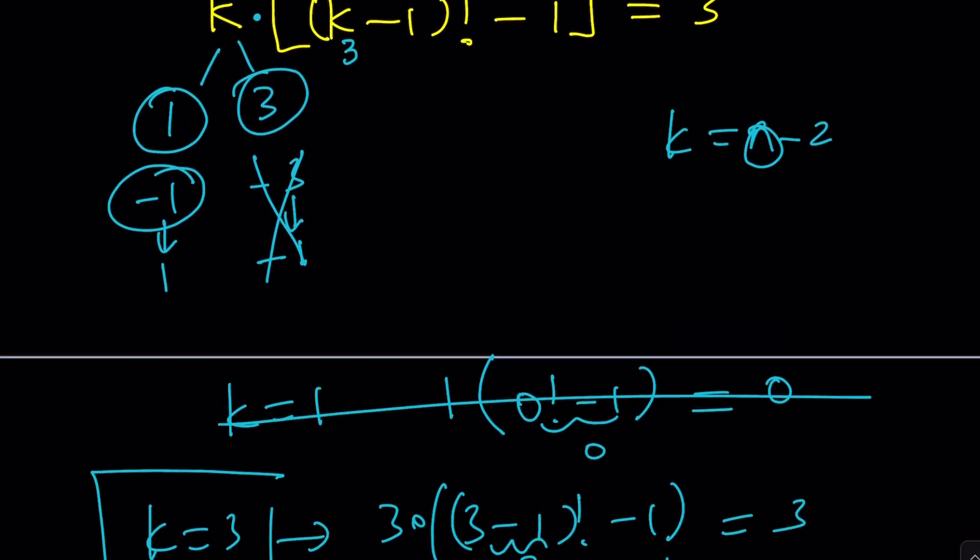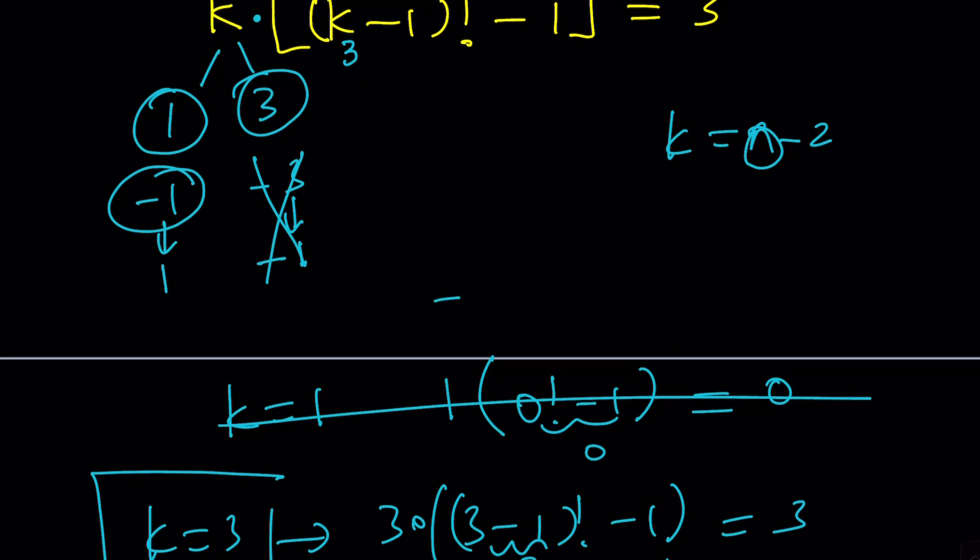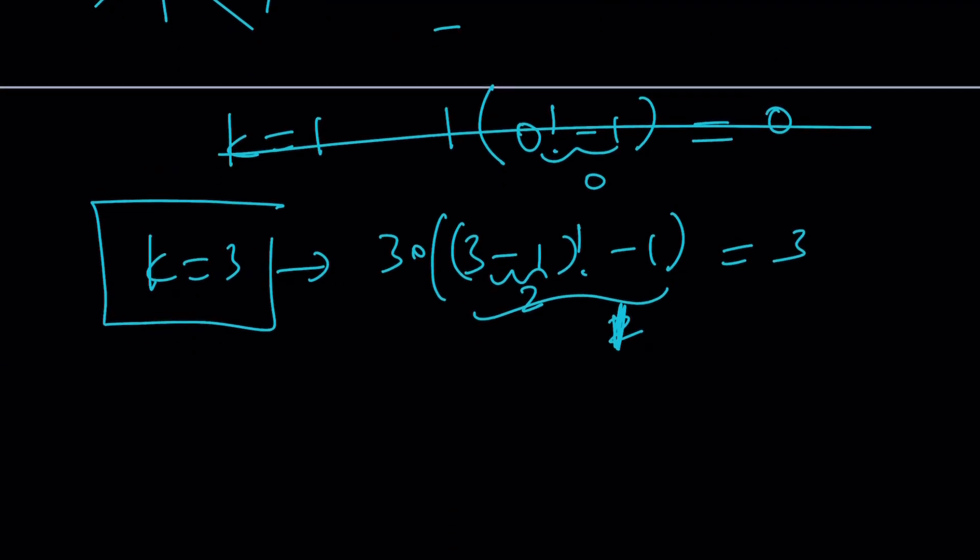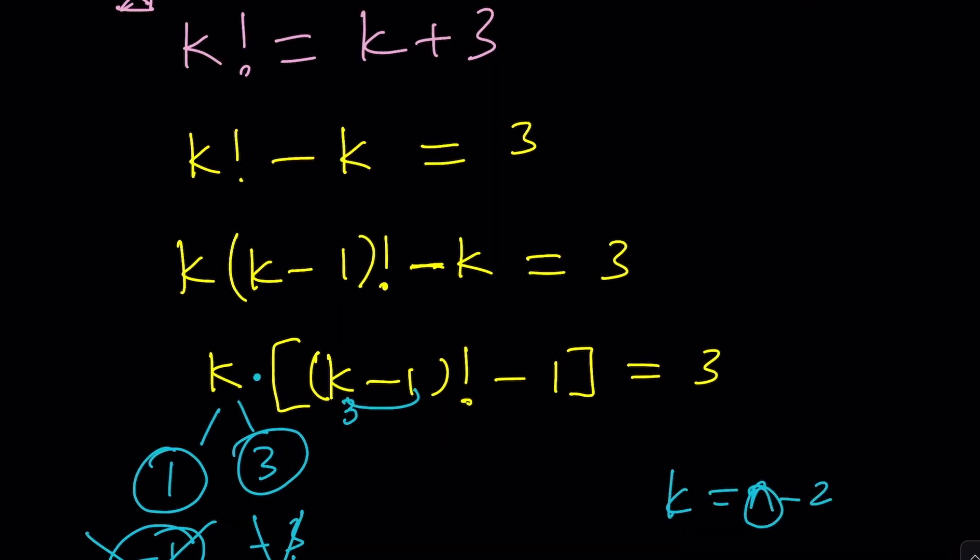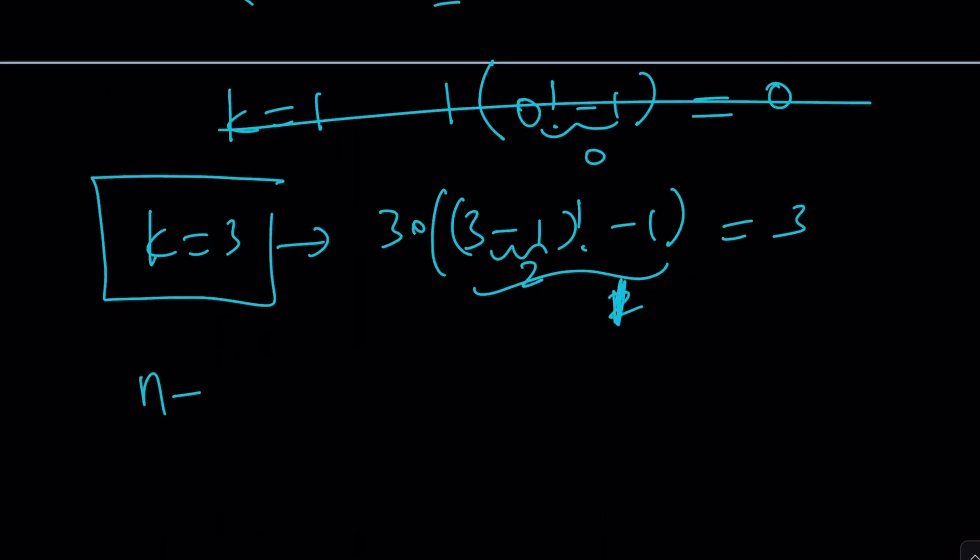What about negative 1? Let's test negative 1. Negative 1 is not going to work because this is going to give us negative 2 factorial, and that's problematic. Okay, so forget about it. The only value that works is k equals 3, but k is n minus 2. Okay. n minus 2 is equal to 3. So, n equals 5 is the only solution, and this brings us to the end of this video.